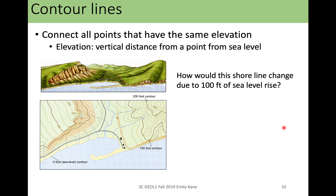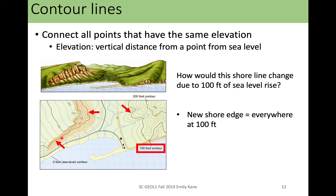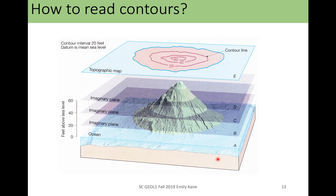Here is the same figure again. Let's think about what would happen if sea level were to rise by 100 feet. Everything below 100 feet — everything below this first index contour — would be underwater. So you find your 100-foot contour, and then the new shoreline would be that 100-foot contour. That's one way that you can think about these contour lines.